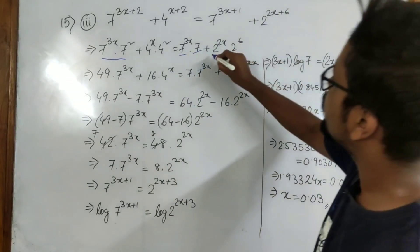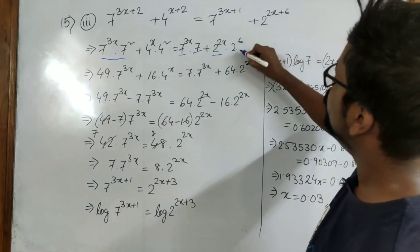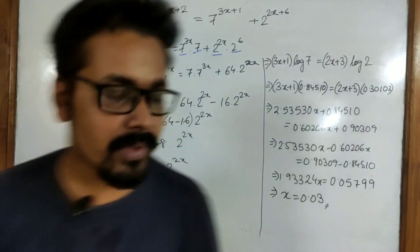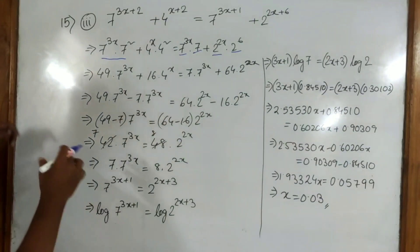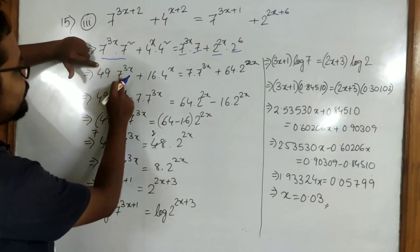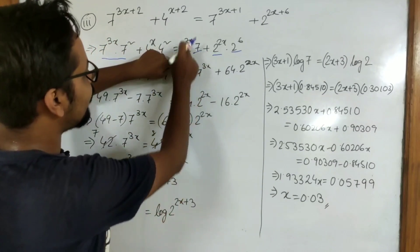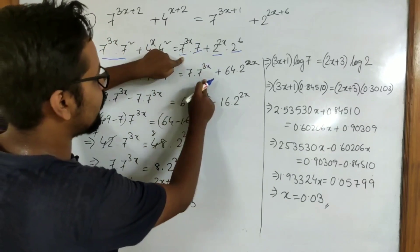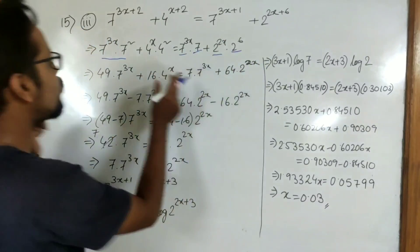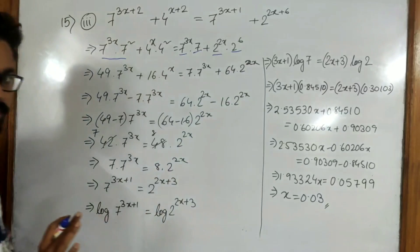Here we have 2 to the power 2x plus into 2 to the power 6. Now 7 squared is 49 and 4 squared is 16. Here we write 7 and keep the same power, and 2 to the power 6 is 64, keeping that part the same. Every number with a variable as the power, we keep it the same and do not change it.